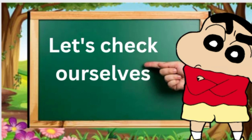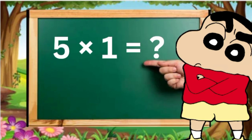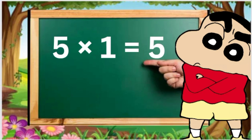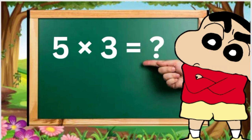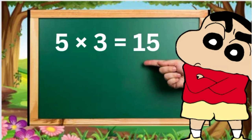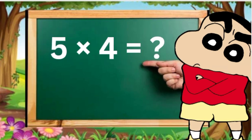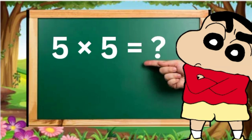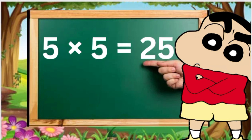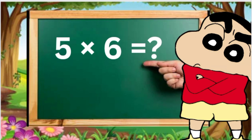Let's check ourselves. 5 1s are 5, 5 2s are 10, 5 3s are 15, 5 4s are 20, 5 5s are 25, 5 6s are 30.